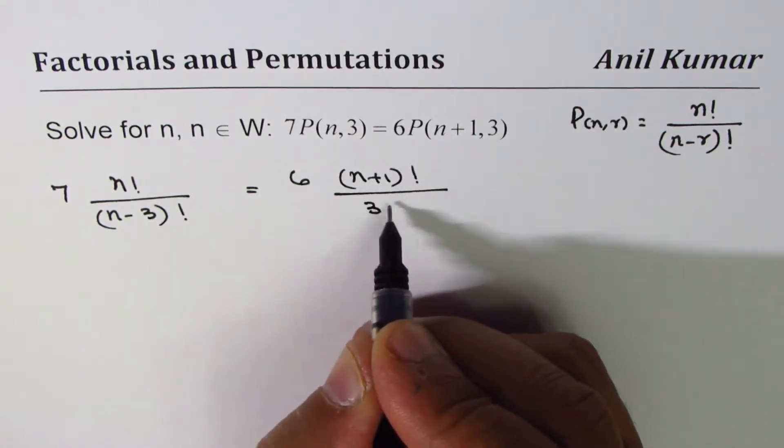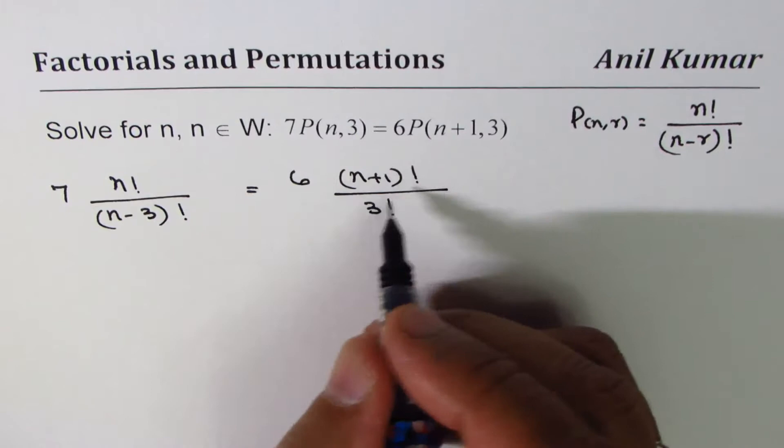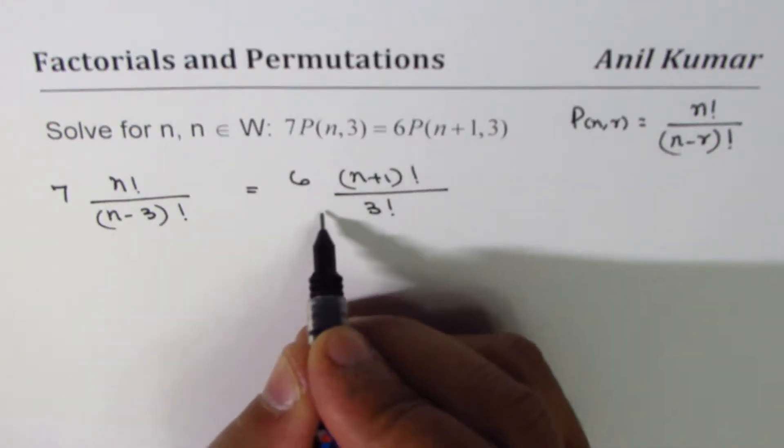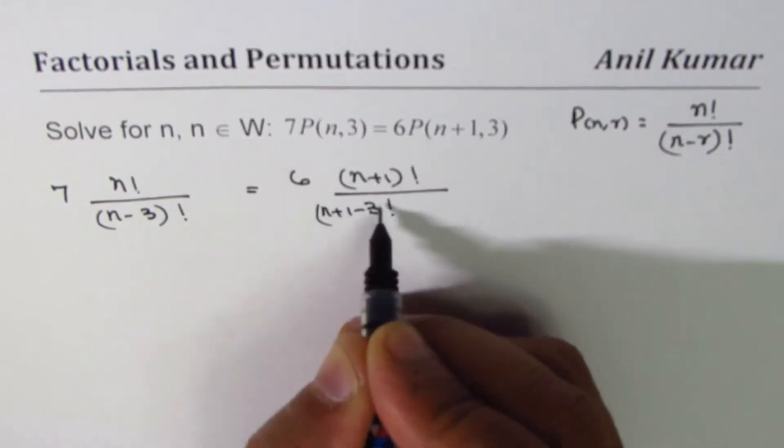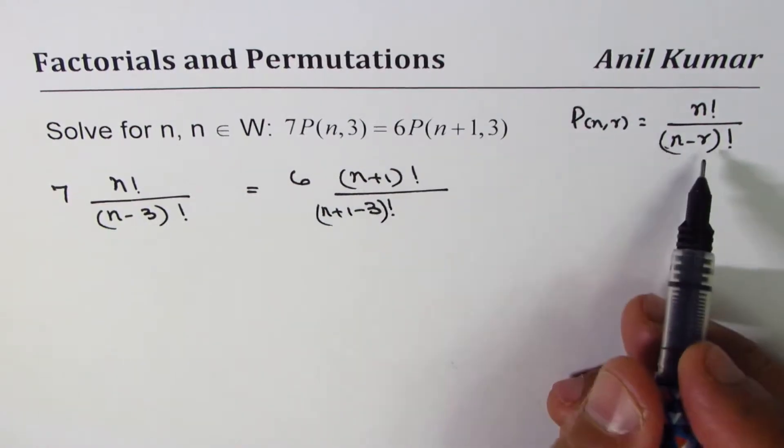Sorry, let me correct that: (n+1) minus 3 gives us (n-2) factorial in the denominator, using the formula (n minus r) factorial.